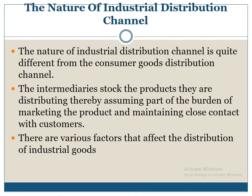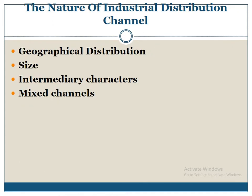Now we will see the nature of industrial distribution channel. The nature of industrial distribution channel is quite different from the consumer goods distribution channel. The intermediaries stop the products from distributing, thereby assuming part of the burden of marketing the product and maintaining close contact with customers. There are various factors that affect the distribution of industrial goods: geographical distribution, size, intermediary characteristics, and mixed channels.